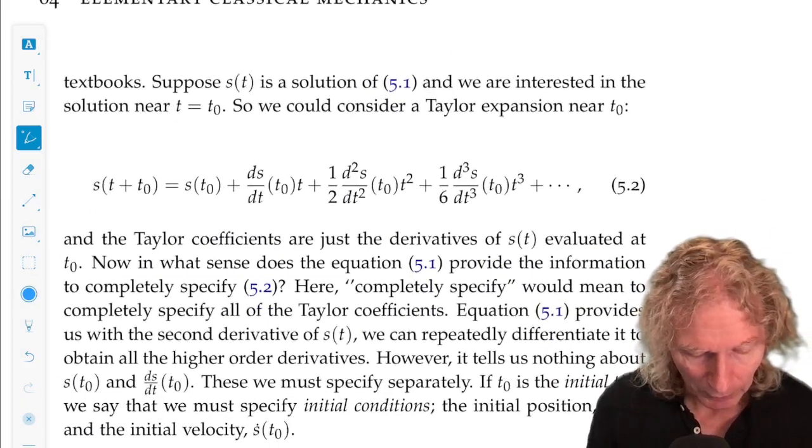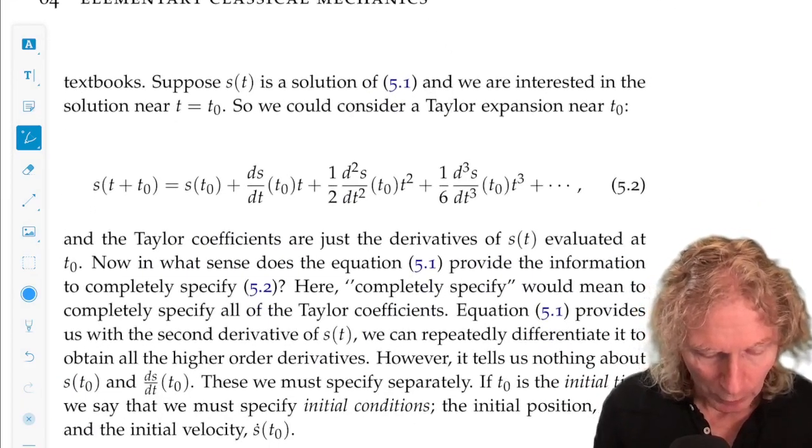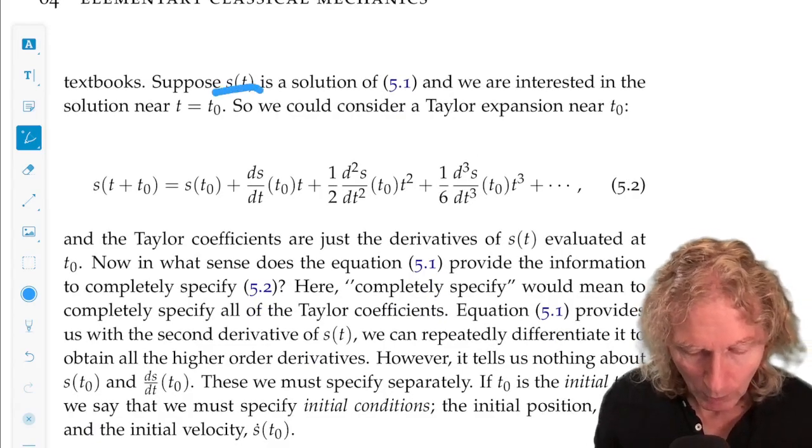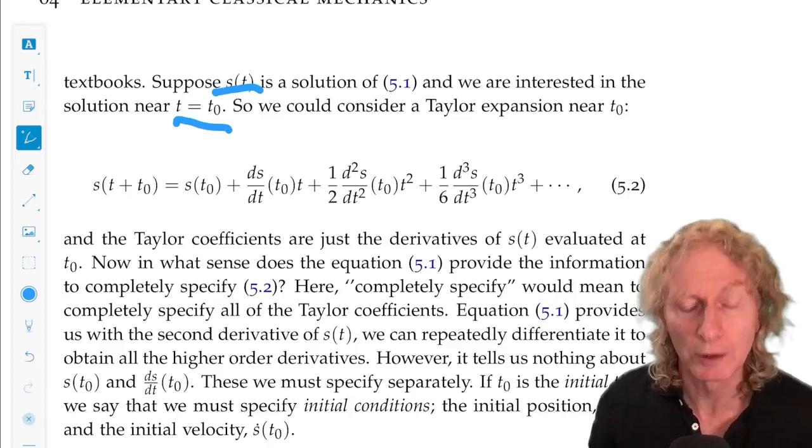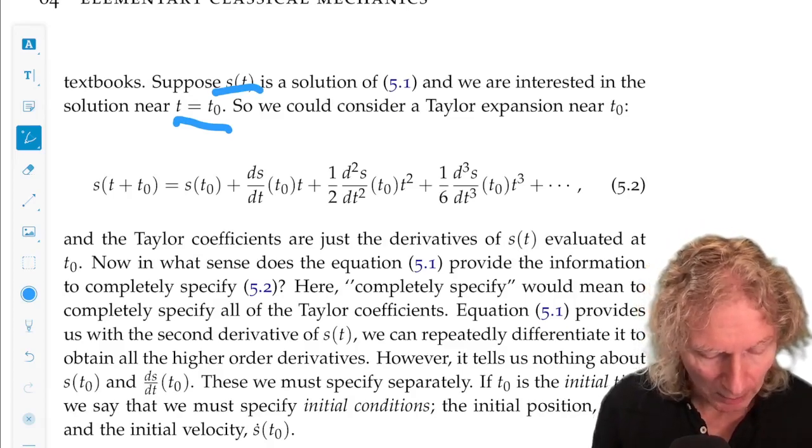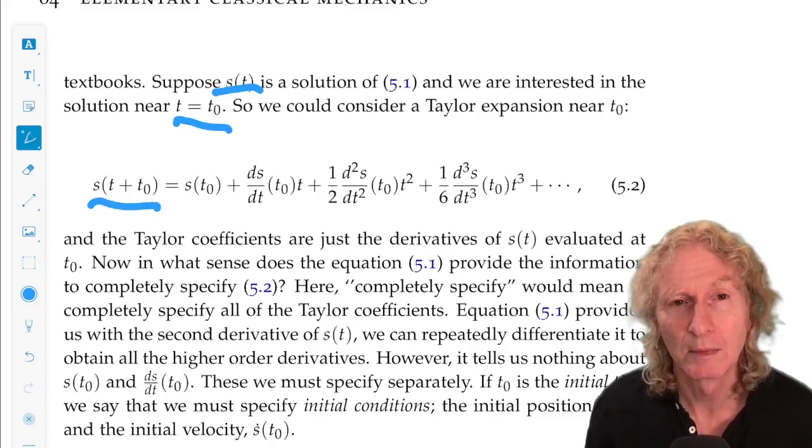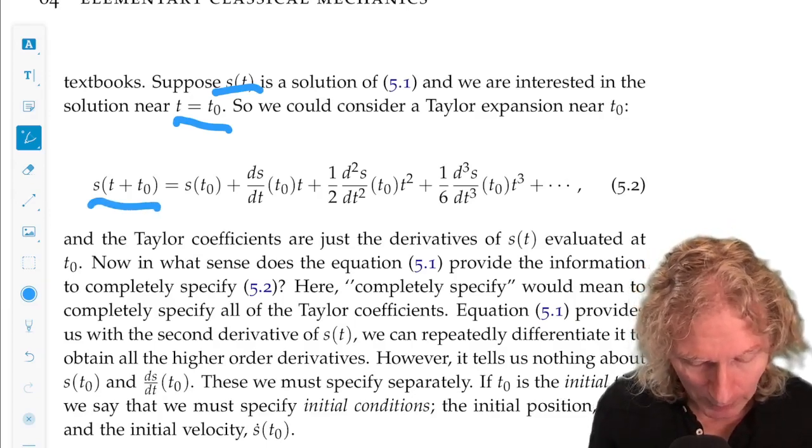All right, now suppose we have a solution of Newton's equations, s of t, and we're interested in the solution near t equal t naught. Okay, we could Taylor expand the solution about t naught. And this is what we would get.